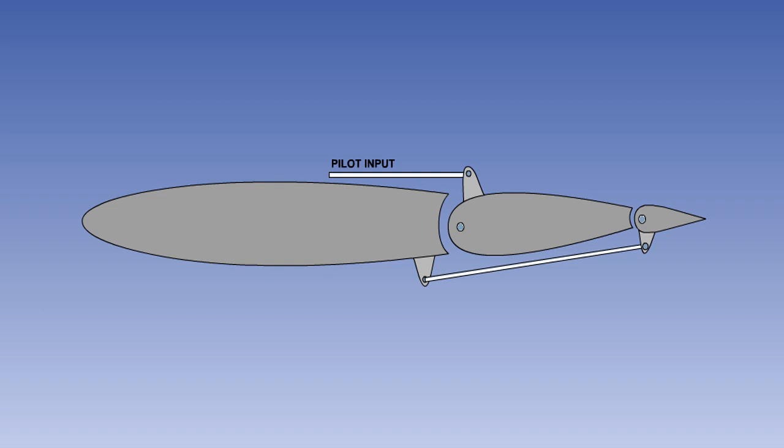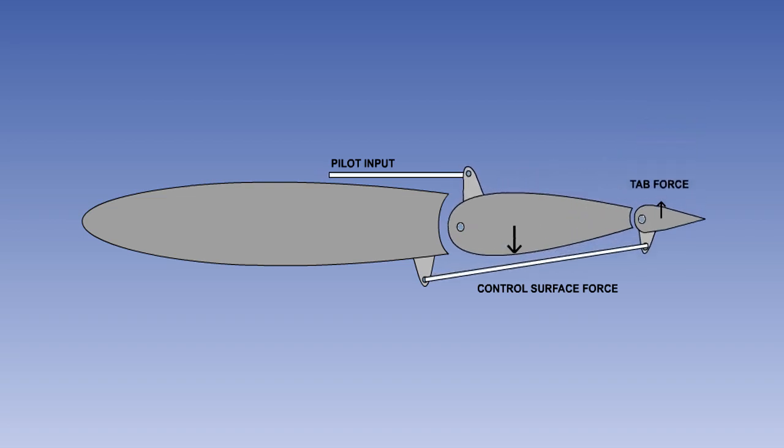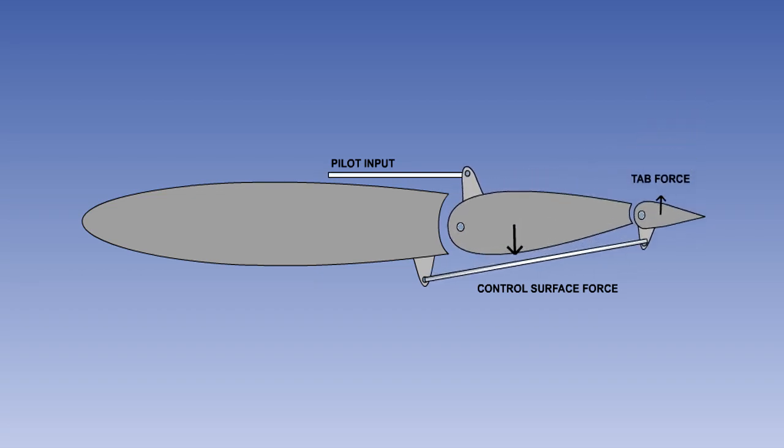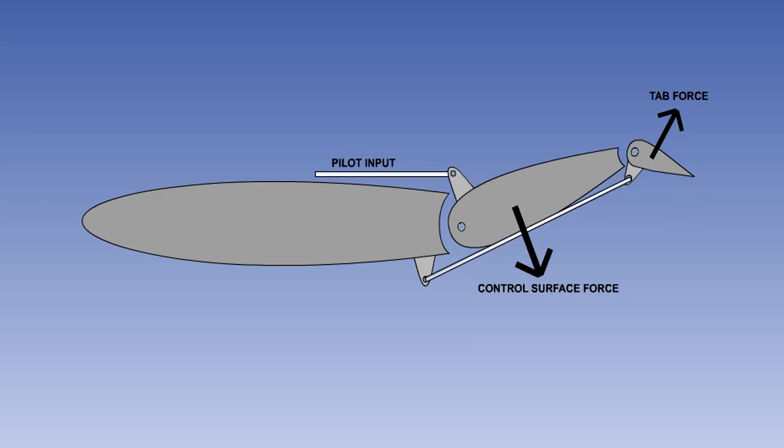We will first consider the balance tab. The pilot has no direct control over tab movement. The pilot's inputs to the flying control are transmitted by a linkage to move the balance tab in the opposite direction to the flying control surface. The pilot moves the control surface. The control surface moves the tab. The balance tab generates an aerodynamic force in the opposite direction to the flying control surface. This reduces the hinge moment and stick force, but will also give some reduction in control effectiveness.